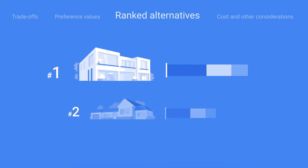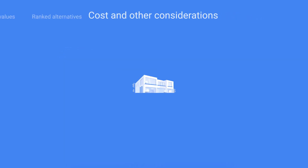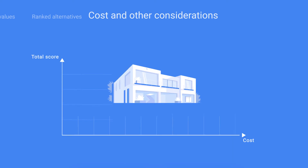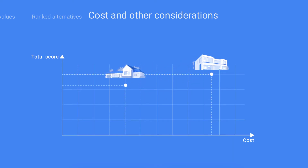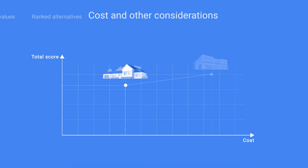But your perfect alternative might not be the one with the highest ranking. Maybe you found the ideal house but the cost is way beyond your budget. If you specify the costs under costs and other considerations, you can use the value for money chart to analyze them alongside the alternative score and choose an alternative that is more suitable for you.